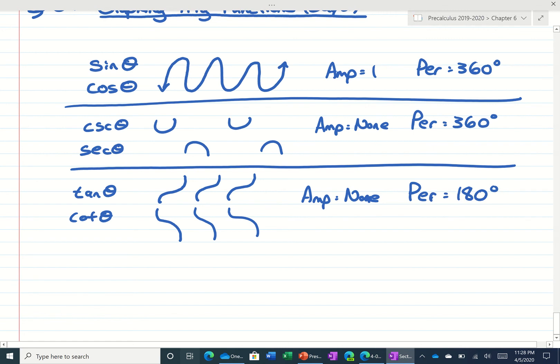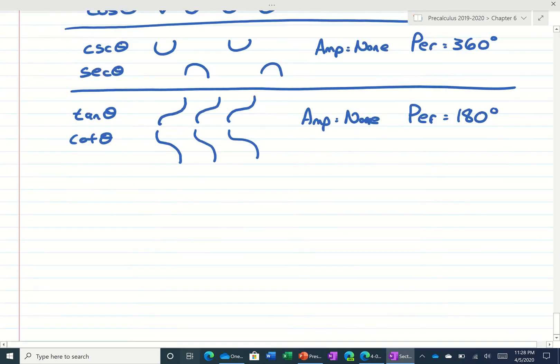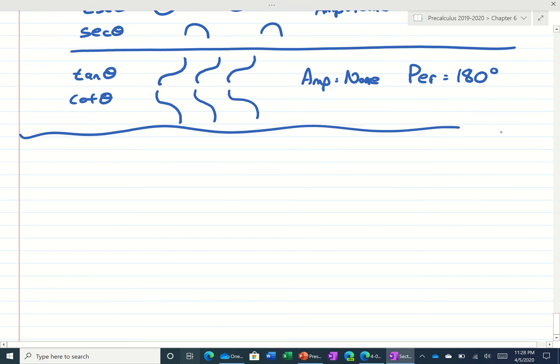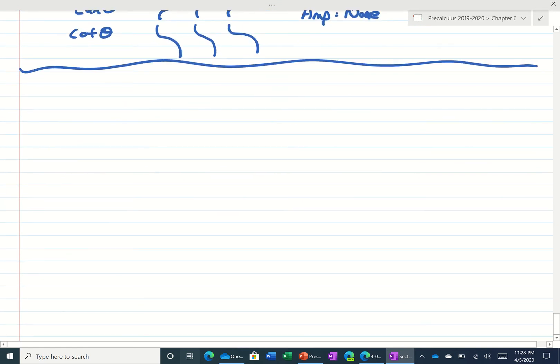What I'll do is I'll graph one of each of these and I'll show you how to use the period, the amplitude, and the shape to get the graph quickly. First, let's just do the graph y equals the cosine of theta. Usually whenever I'm graphing I go from negative, I go up by 90s, go between negative 360 and positive 360.